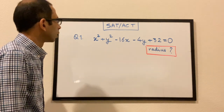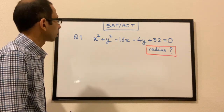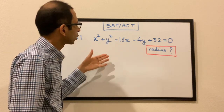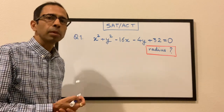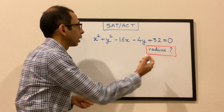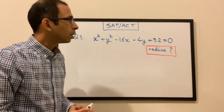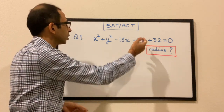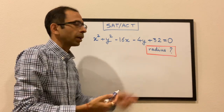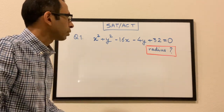Our very first question: we have been given the equation x² + y² − 16x − 4y + 32 = 0, and we have to find the radius of this circle. So essentially this equation represents a circle and we have to find the radius.